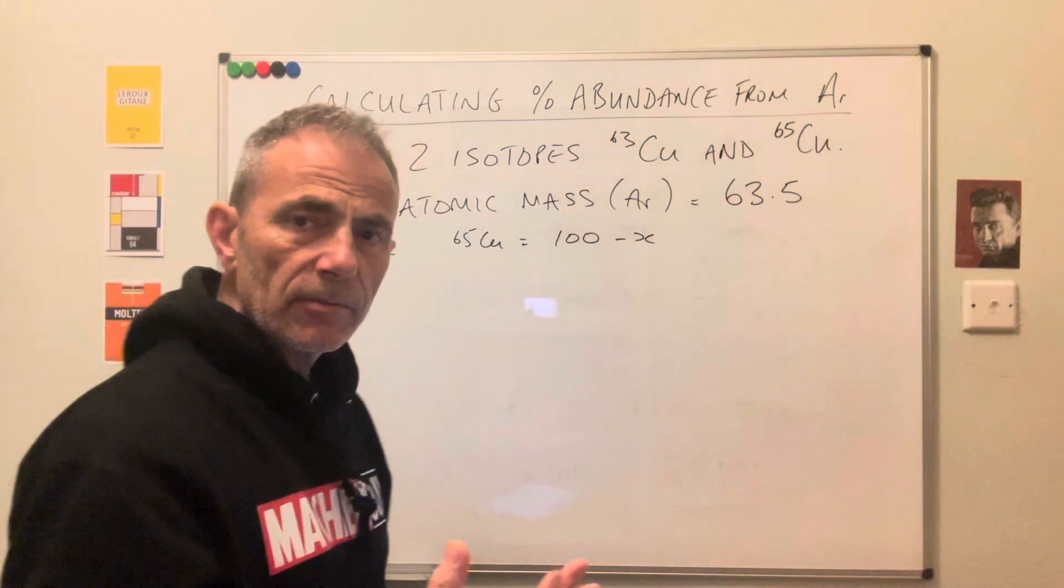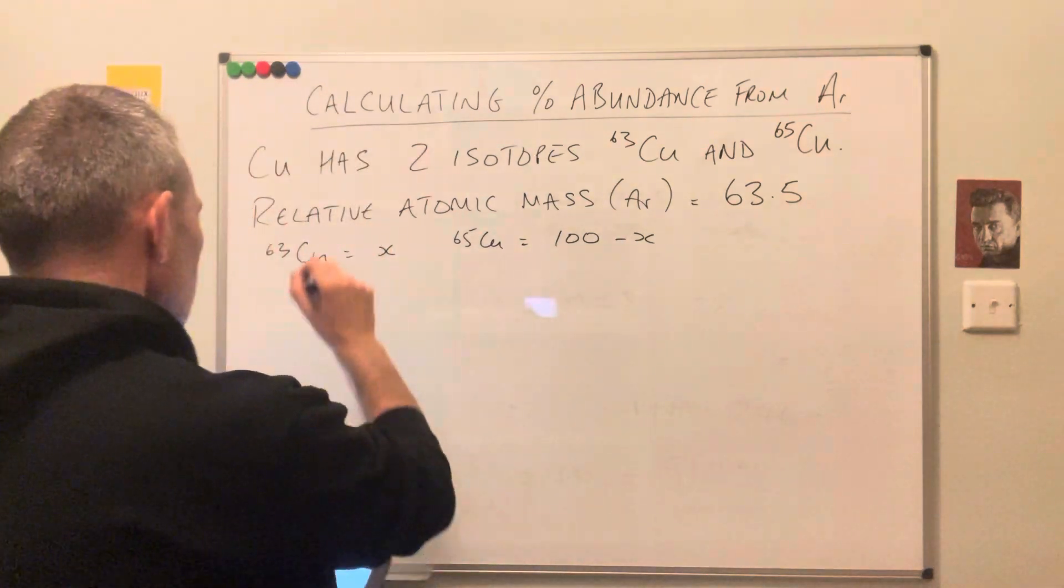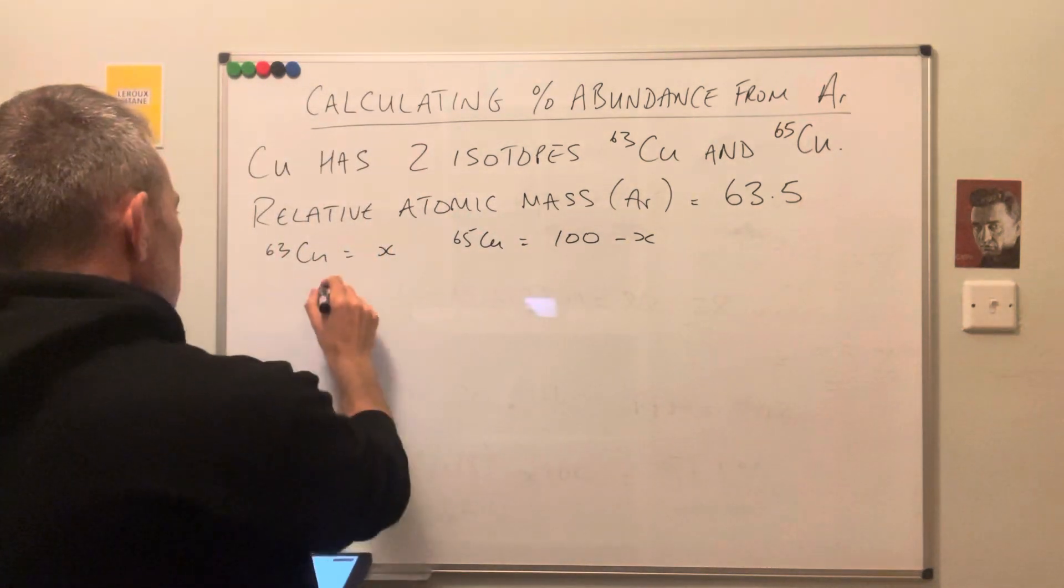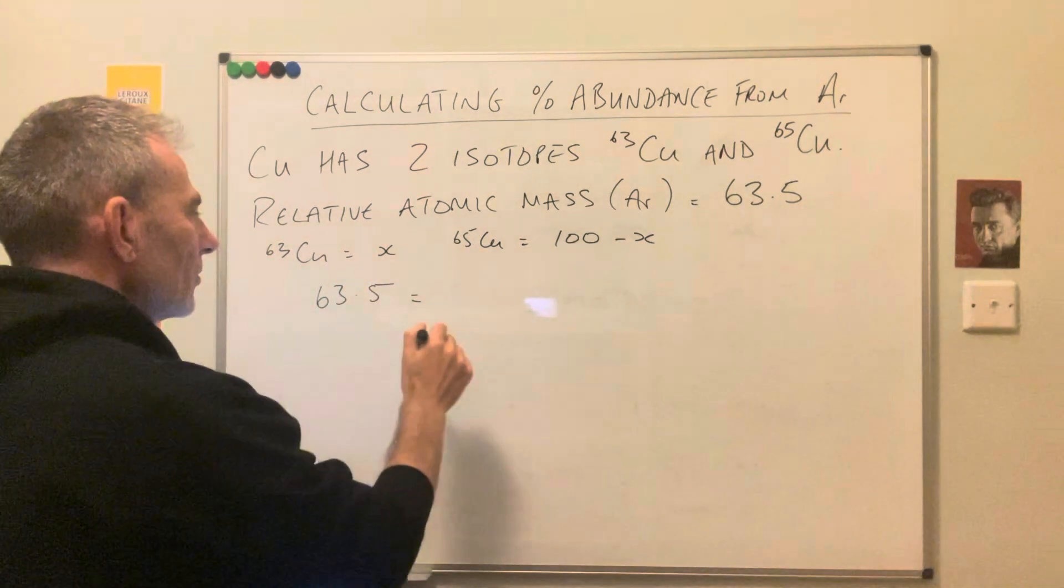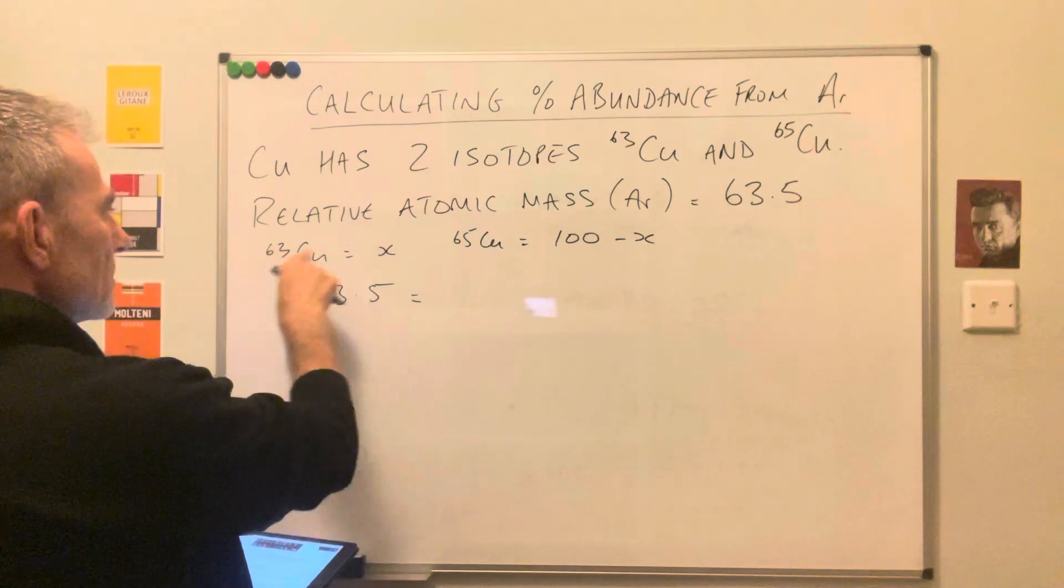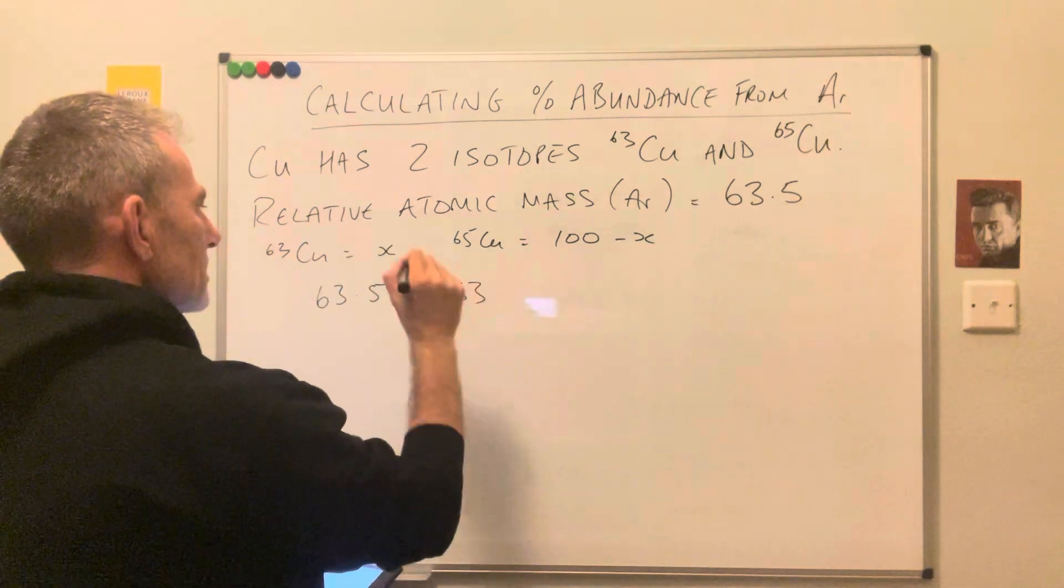Okay, so the next thing we do is fit them into the equation. The relative atomic mass is 63.5, so that equals the isotopic mass times the abundance. So we've got 63 times x, so 63x.